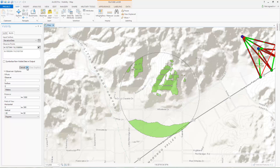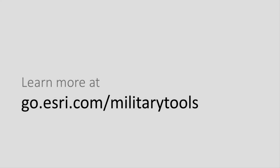The shaded areas are the areas visible by the observer. As you can see, Visibility allows you to easily perform both linear and radial line of sight analyses. Thanks for watching this video. For more information, please visit the Military Tools for ArcGIS website.